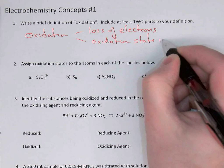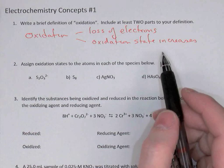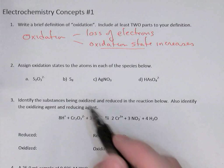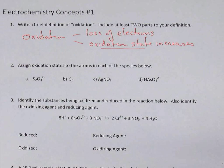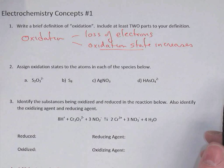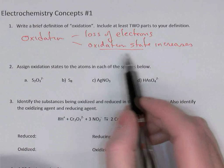Remember that an oxidation state is similar to a charge — it's like an imaginary charge used to keep track of electrons. If an atom loses electrons, it's losing negatives, and so its charge, or its oxidation state, will go up.